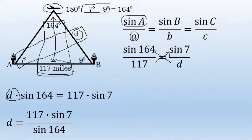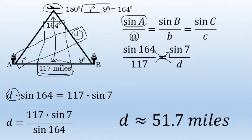This value is irrational, but to one decimal place, it's 51.7 miles. The distance from the airplane to the closer airport is 51.7 miles.